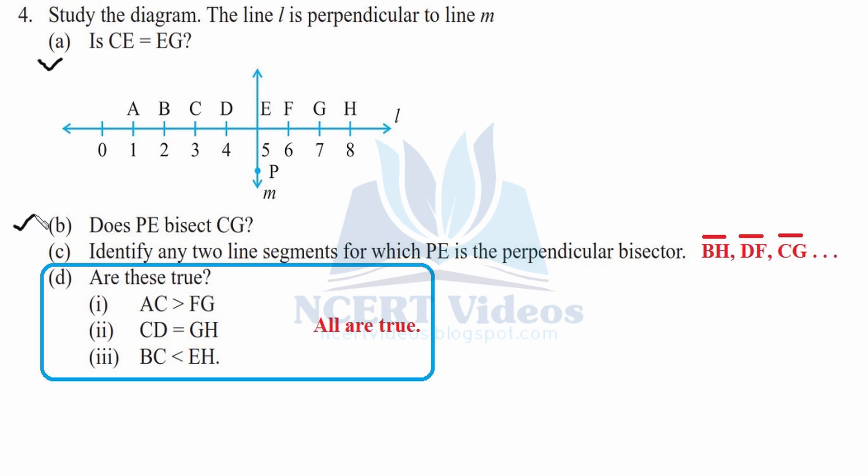Part (c): Identify any two line segments for which PE is the perpendicular bisector. There are many line segments that can be formed, namely BH is one of them, then DF, then CG, and we can name EH and many others as well. Therefore there are many possibilities.